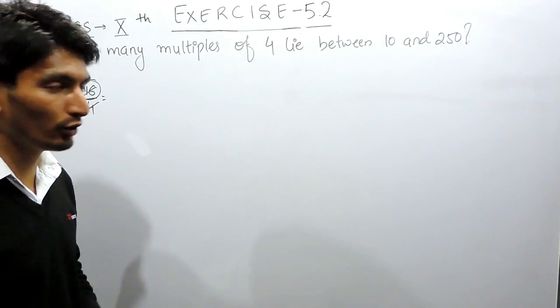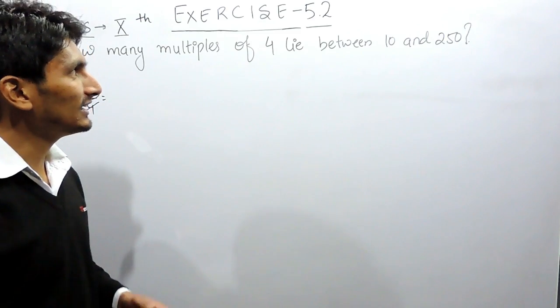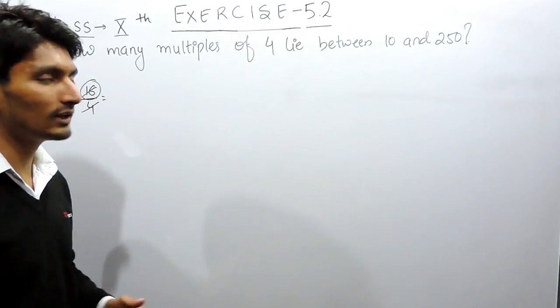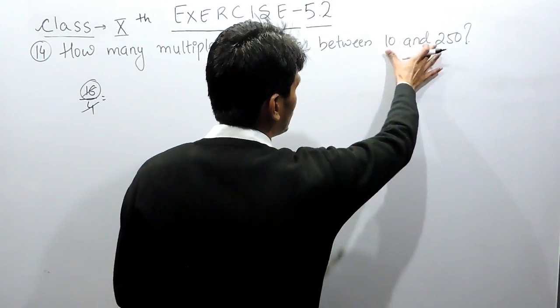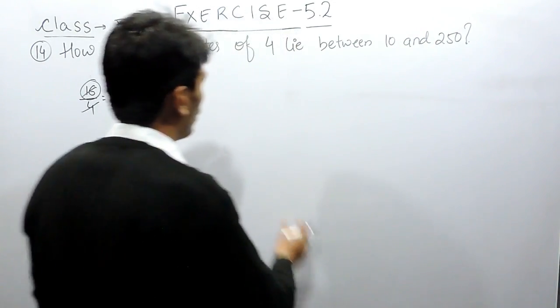Obviously, if these are the multiples of 4, they must be divisible by 4 completely. So in this case, you have to find how many multiples are there between 10 and 250 of 4.